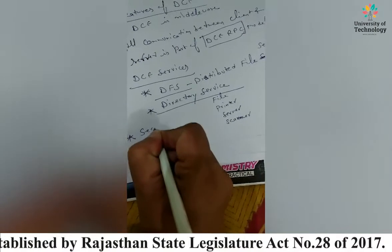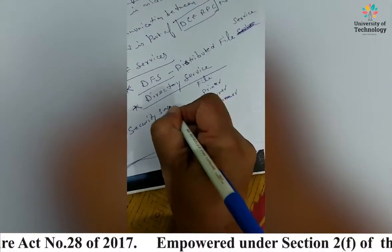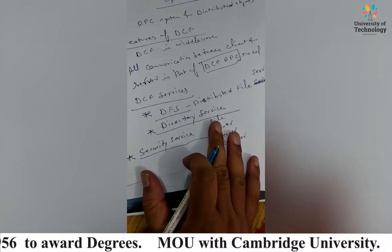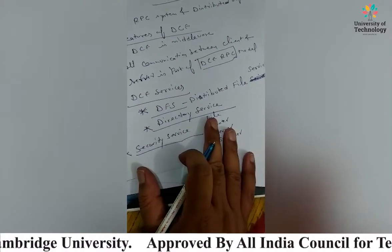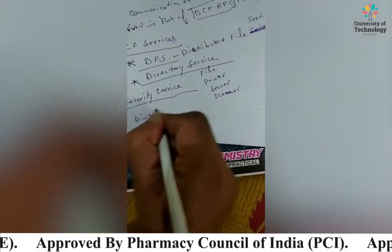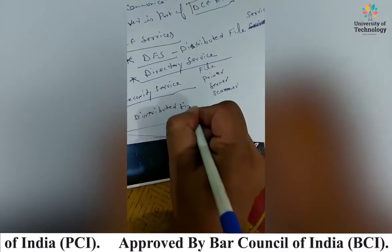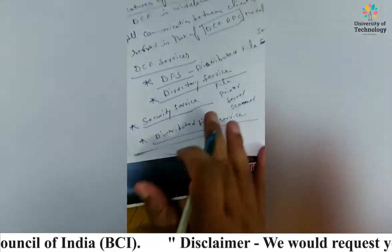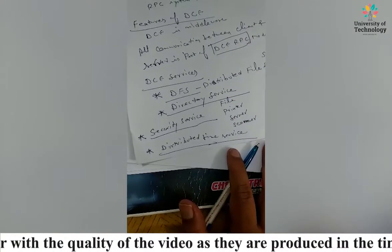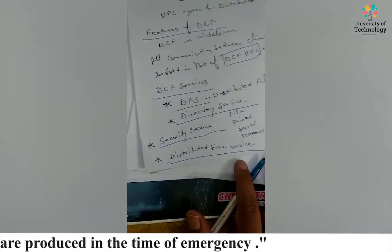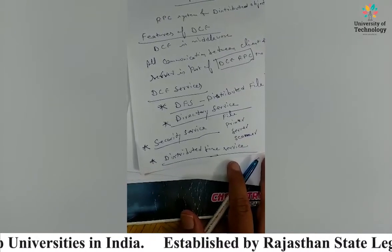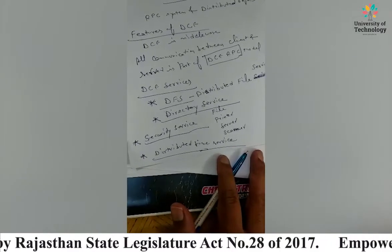Next is the security service. Only authorized persons can access protected and secure resources. The security service allows processes to check user authenticity. Next is the distributed time service. Inter-process communication between two system components requires synchronization so that communication takes place in the designated order only. This service is responsible for maintaining a global clock and synchronizing local clocks.